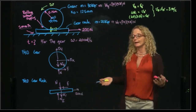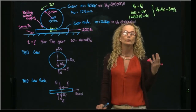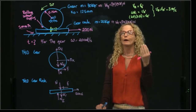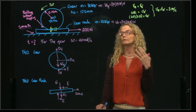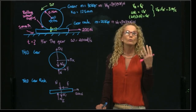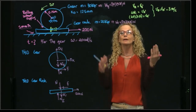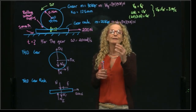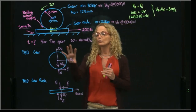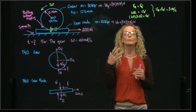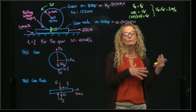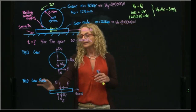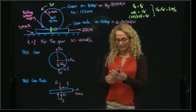Now that we have the free body diagrams, we decide which approach to use. We have three approaches: force and acceleration, energy, or momentum. We use force and acceleration when we want to relate forces with acceleration. We use energy and work when we want to relate forces with distance. In this case, we want to relate forces with time — therefore we use the approach of linear and angular momentum. Since the gear is rotating, we apply the principle of angular momentum to it, and for the gear rack we apply the principle of linear momentum.